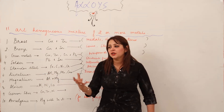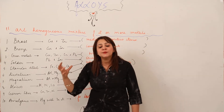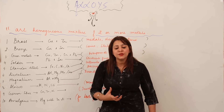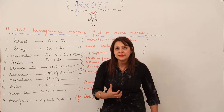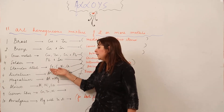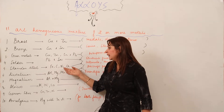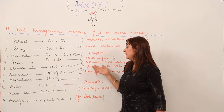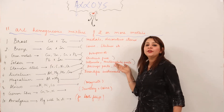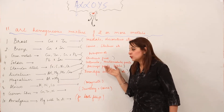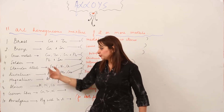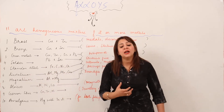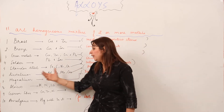Next is stainless steel, which you are all familiar with — most of the utensils we use in the kitchen are made of stainless steel. In stainless steel, iron is mixed with carbon along with nickel and chromium. This makes the iron corrosion-free, and that is why it is used in making utensils and also automobile parts.